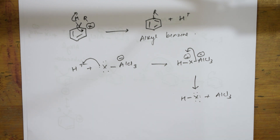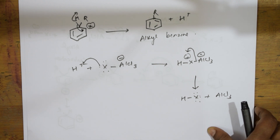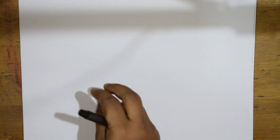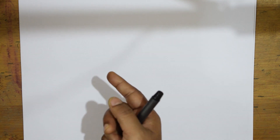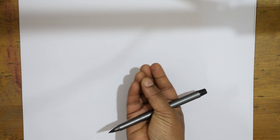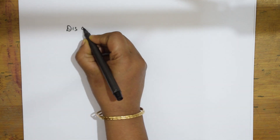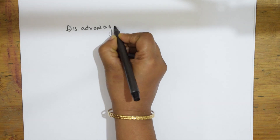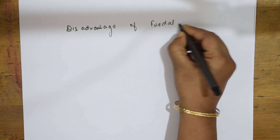Now let's discuss the disadvantage of Friedel-Crafts reaction. In some cases, the carbocation that is formed rearranges to become a more stable carbocation before it can attack the benzene ring. This rearranged carbocation then enters the ring instead of the original one. Because of this rearrangement, we get an unexpected product — not the intended alkyl group but the rearranged one.